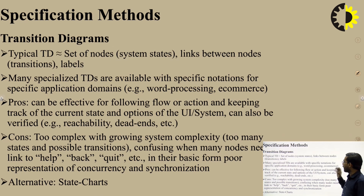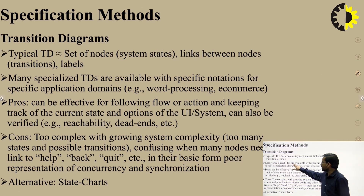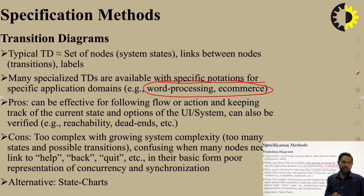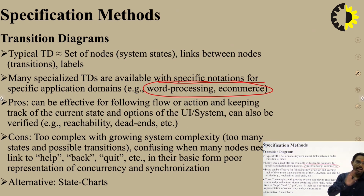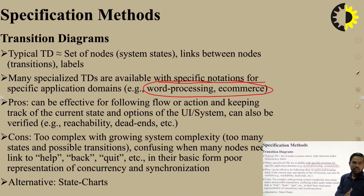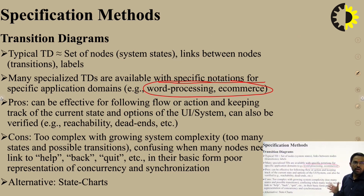A transition diagram (TD) consists of a set of nodes — which may represent states — and links between nodes representing transitions. Many specialized transition diagrams are available with specific notation for specific application domains such as word processing or e-commerce. Pros: effective for following flow of action and tracking current state. Cons: can become too complex with growing system complexity, too many states, and confusing when many nodes need to link to help, back, or quit actions. Also poor representation of concurrency and synchronization.